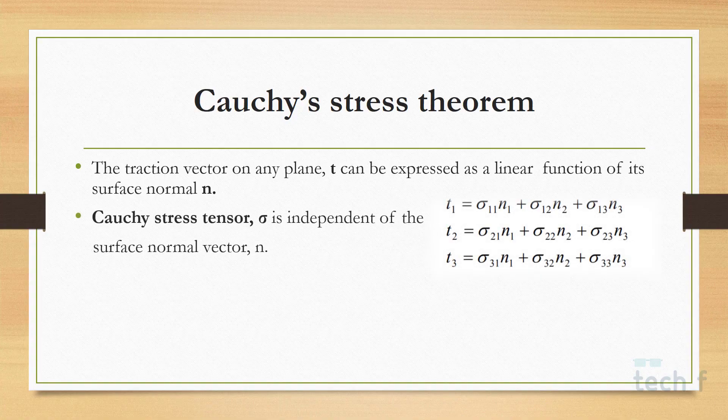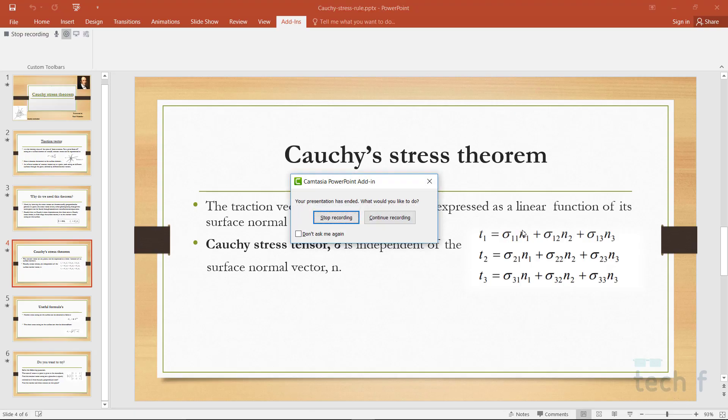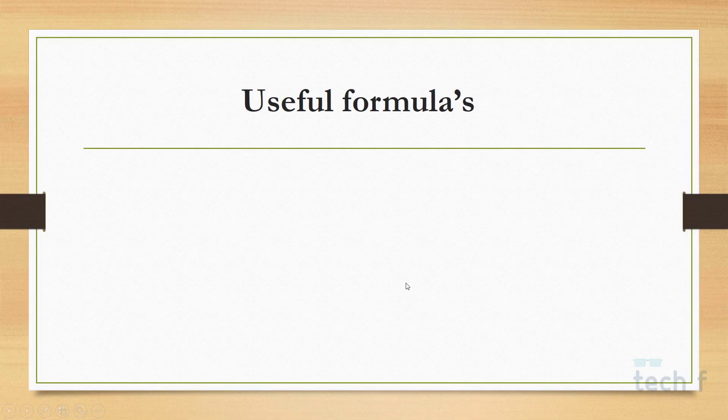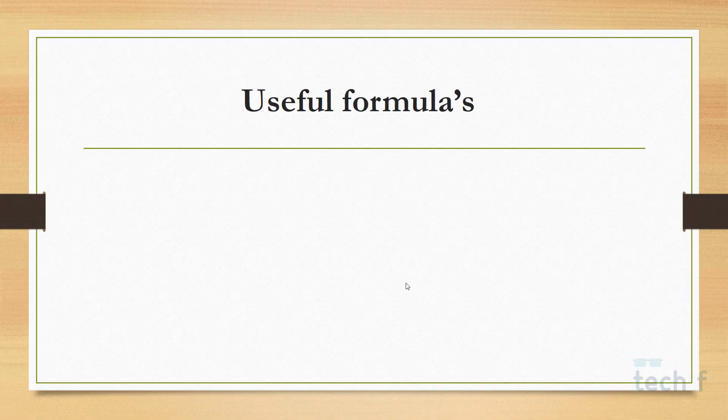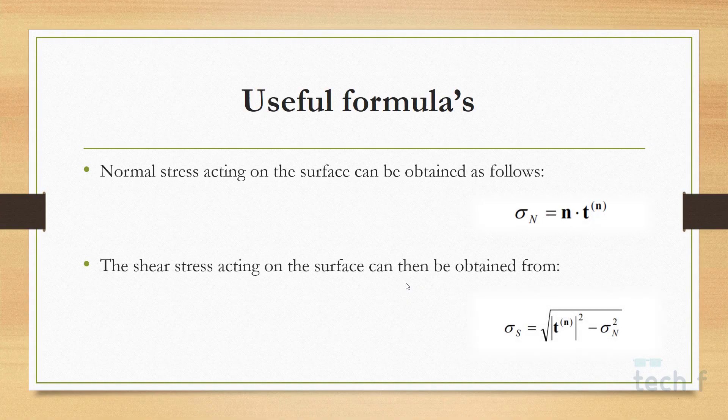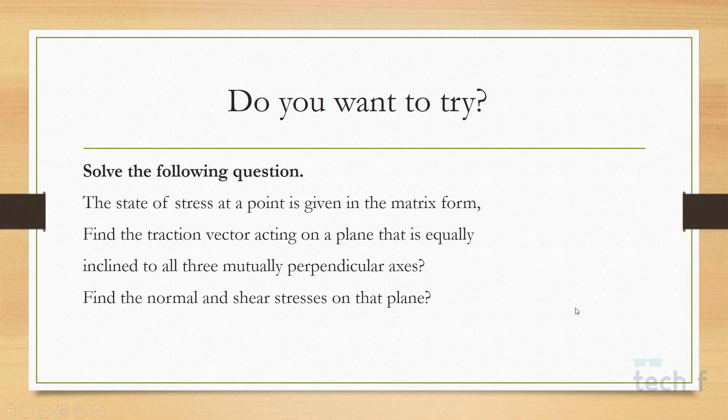As we can see, Cauchy stress tensor is independent of the normal vector, and the components of traction t₁, t₂, t₃ can be expressed as follows. To find the normal stress, we just have to do the dot product of n vector with the traction, and the shear stress can be found out from the formula as shown.